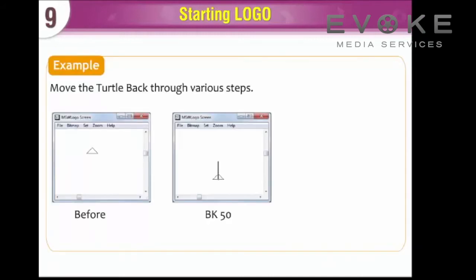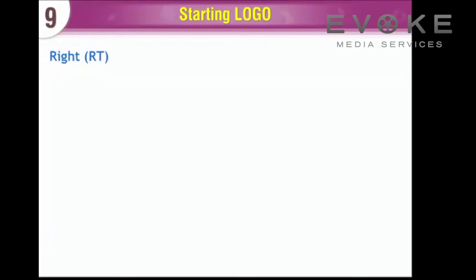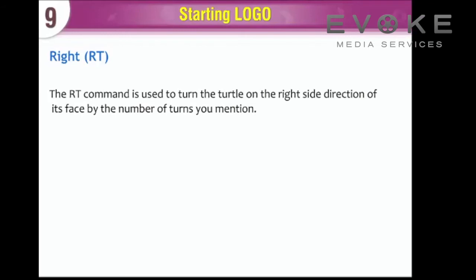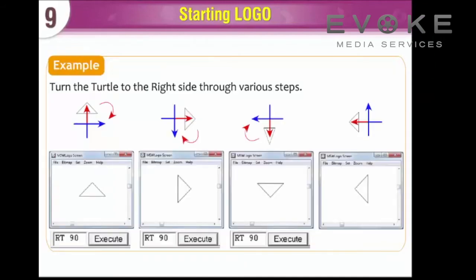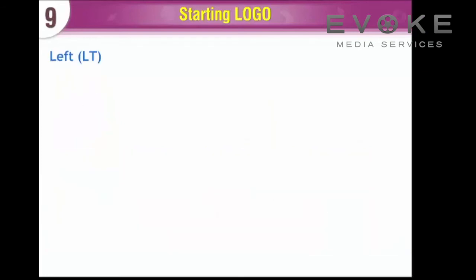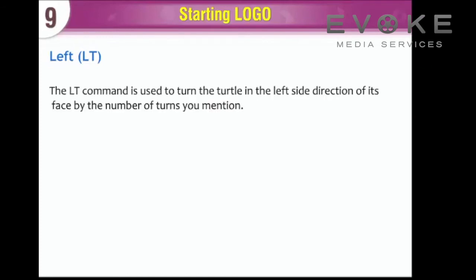Example: bk 50, bk 100. Right (rt). The rt command is used to turn the turtle to the right side direction of its face by the number of turns you mention. Command: rt [number of turns]. Example: turn the turtle to the right through various steps — rt 90.